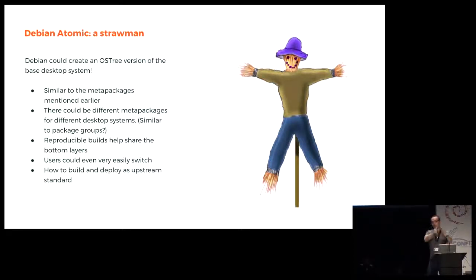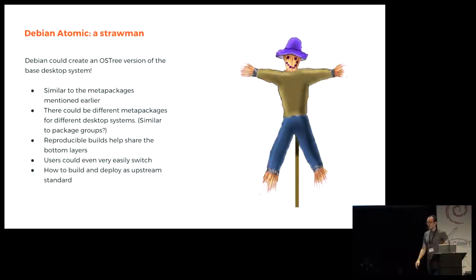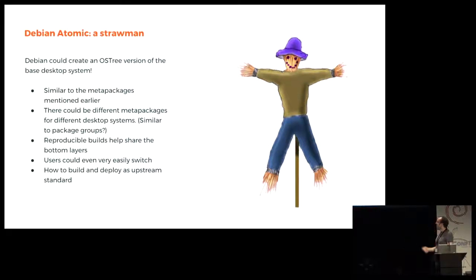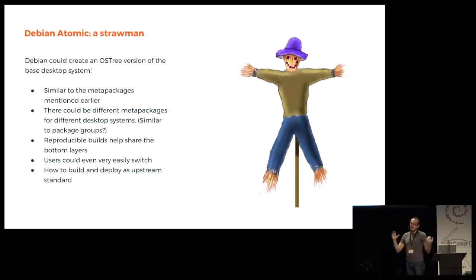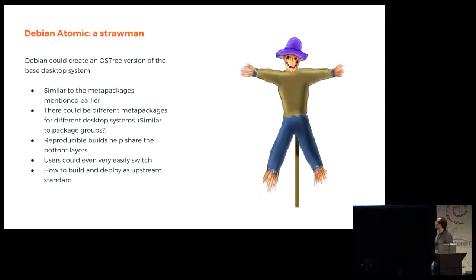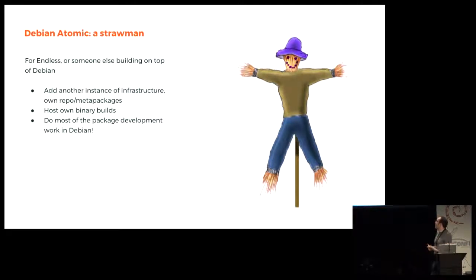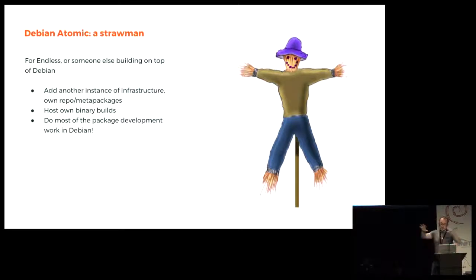Users could very easily switch between different trees without the complication of how the KDE package interacts with the GNOME package when you have both installed — which always opens huge discussions. I've seen it from both the perspective of an upstream developer and a distro developer. If Debian did this, then how to build and deploy these Debian trees pushed to an OSTree would become a standard, not something we made up at Endless. For us or somebody else building on top of Debian, there would be many advantages — we would just host our binary builds and add our packages on top of a base shared with the rest of Debian. We would do most of the package development work directly in Debian.